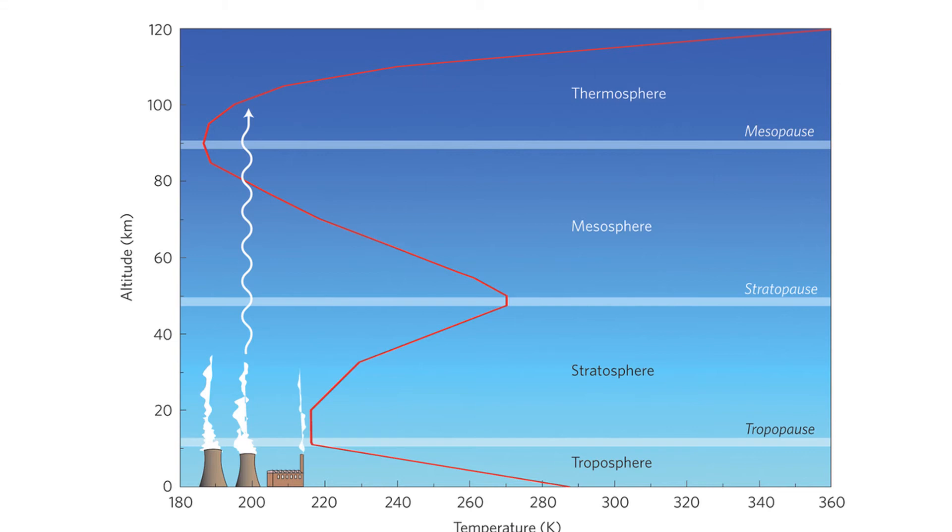However, the temperature does not have a continuing decreasing trend. It does decrease continuously with height in the troposphere until about 11 kilometers, when there is an area of stable temperature and then when it enters the stratosphere, the temperature starts to increase again.